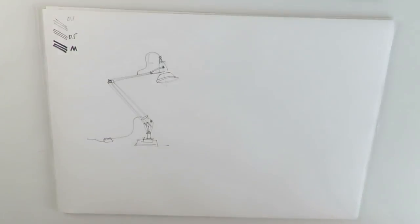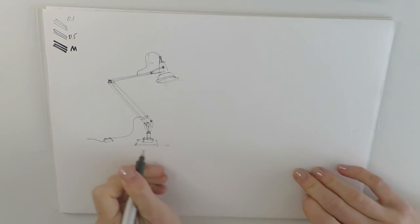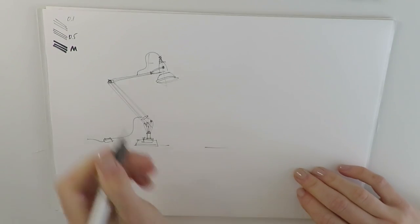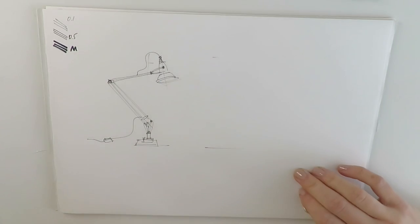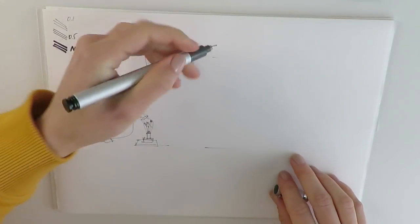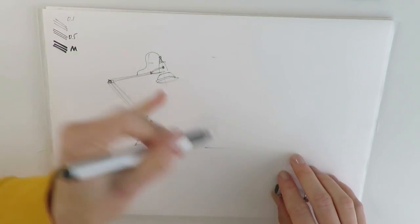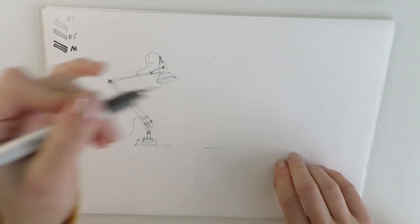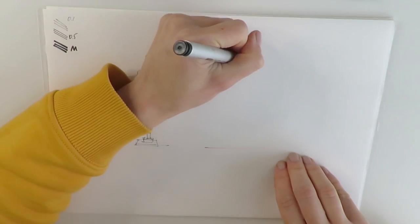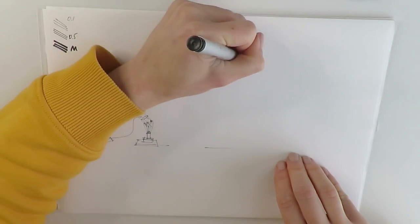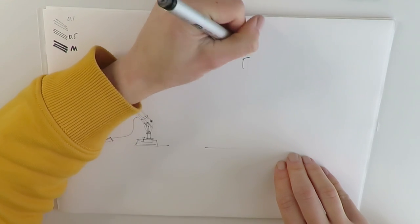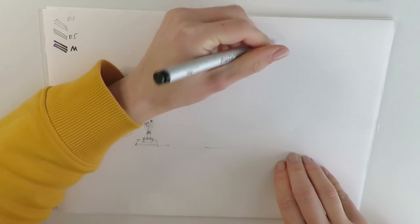In my case it is Copic Multiliner 0.5 thickness so it will look slightly bolder in comparison with really teeny tiny hairline of the first drawing we did.